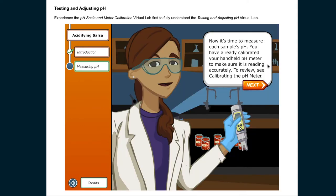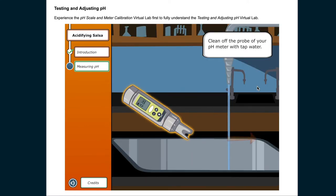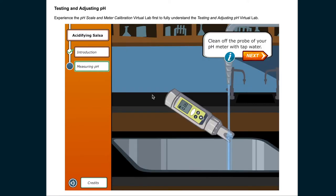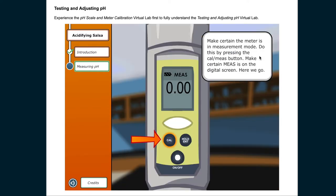Now it's time to measure each sample's pH. You have already calibrated your handheld pH meter to make sure it is reading accurately. To review, see calibrating the pH meter. Clean off the probe of your pH meter with tap water. Remember, some meters require distilled or deionized water. Make certain the meter is in measurement mode. Do this by pressing the CALMES button. Make certain MEAS is on the digital screen.